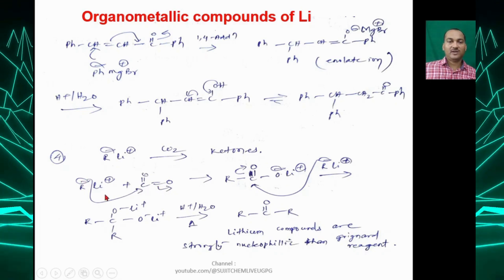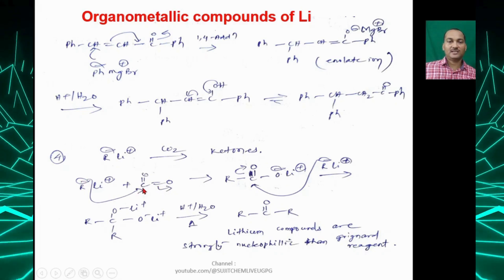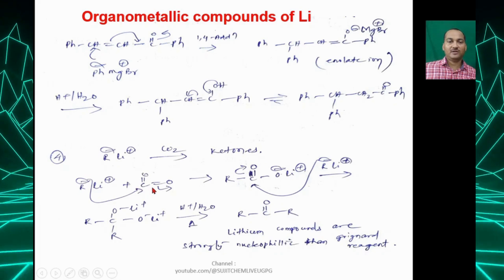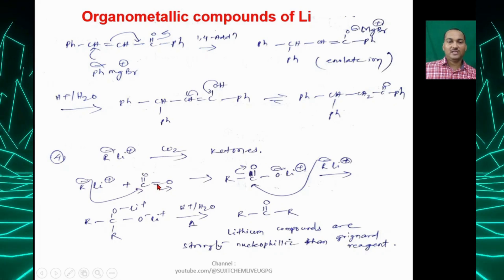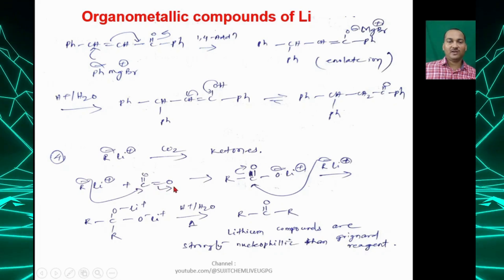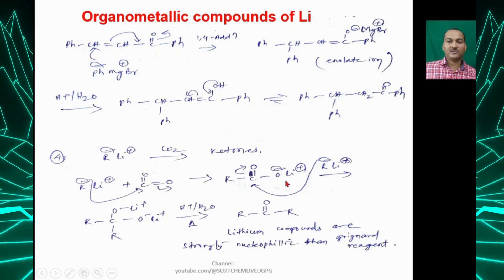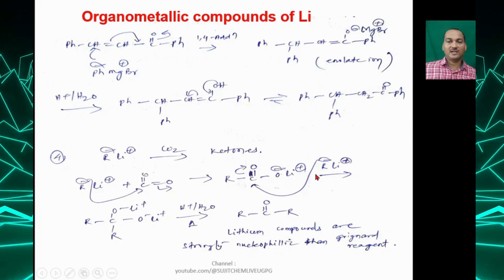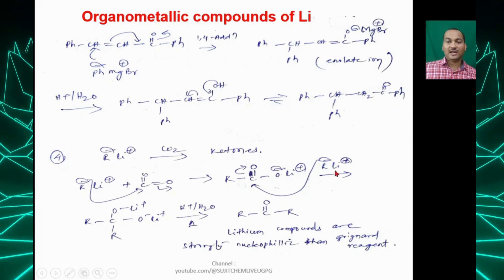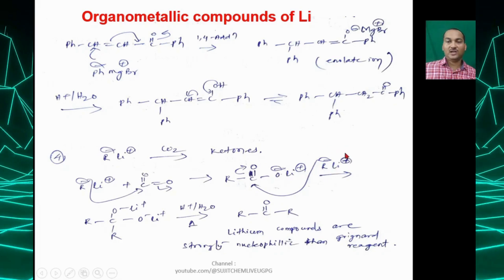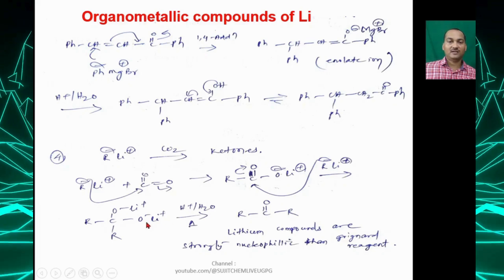R⁻ attacks the carbonyl carbon of CO₂, the double bond breaks on oxygen giving RCO₂⁻Li⁺. A second equivalent of R⁻Li then attacks that carbon.